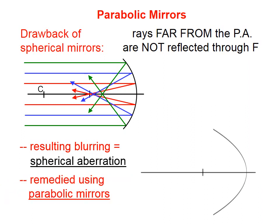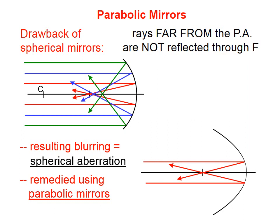We fix this using a parabolic mirror, which has a cross section that's parabolic in shape. Parabolic mirrors also have a focal point, but they have the distinct advantage that no matter where the rays are with regard to the principal axis, they all are reflected through the focal point.